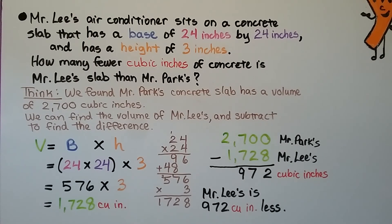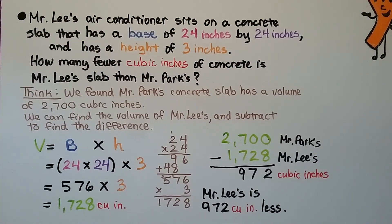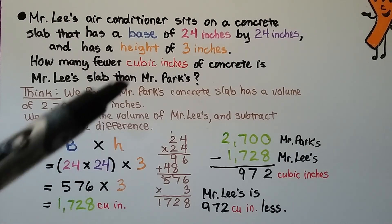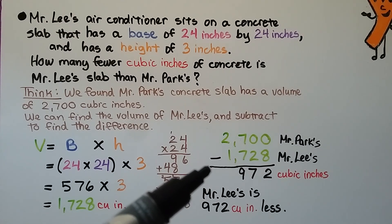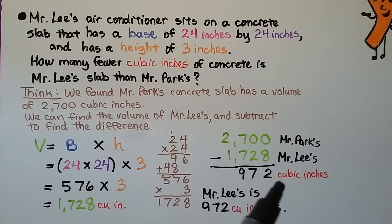We just found Mr. Park's concrete slab volume. Mr. Lee's air conditioner sits on a concrete slab that has a base of 24 inches by 24 inches and has a height of 3 inches. How many fewer cubic inches of concrete is Mr. Lee's slab than Mr. Park's? We think. We found Mr. Park's concrete slab has a volume of 2,700 cubic inches. We can find the volume of Mr. Lee's and subtract to find the difference. His is 24 by 24 for the base. That's 576. We multiply it by the height, 3 inches. We get 1,728 cubic inches. We know Mr. Park's. We know Mr. Lee's. Now we just use subtraction and find a difference of 972 cubic inches.